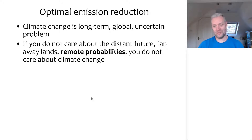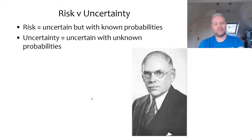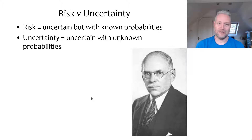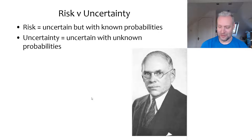And now the turn is for the probabilities. Just some words — the way economists talk about risk and uncertainty is that risk is the case where the future is uncertain but we know the probabilities, whereas uncertainty typically refers to the case where we do not know the probabilities. These terms are of course due to Frank Knight, who you see here.